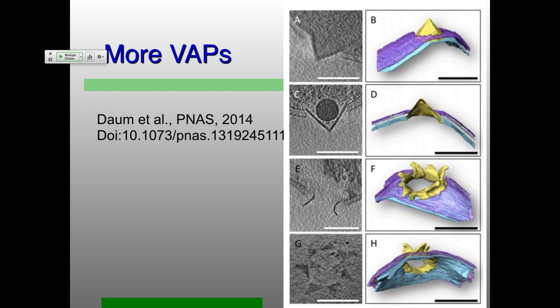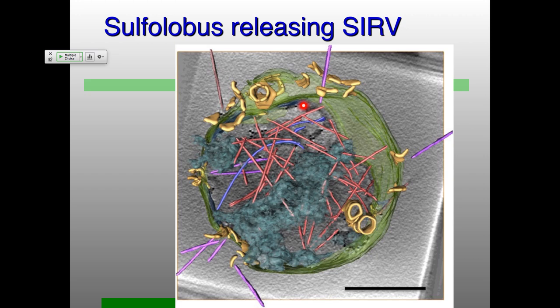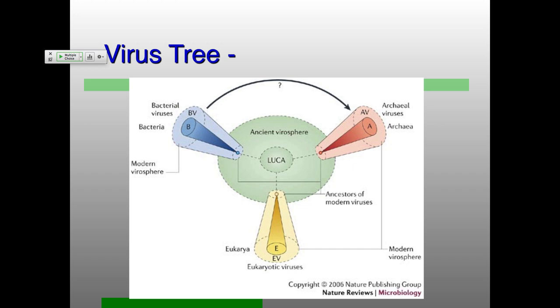This is a reconstructed false-colored tomogram of a single poor Sulfolobus cell producing SIRVs through all of these pyramids, which have made holes, and then each of these particles can be released through those holes. One question is where do viruses come from — this comes full circle back to the beginning of the course.